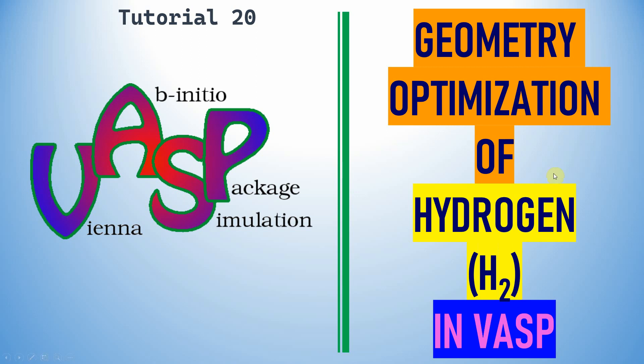If you do geometry optimization of the hydrogen molecule in VASP, what will happen during the optimization is the H2 molecule dissociates into two atoms, so we cannot get that accurate energy. To overcome this issue, I'm going to tell you the solutions to optimize the H2 molecule.